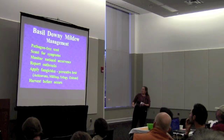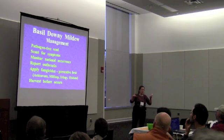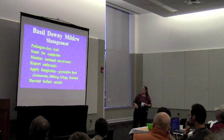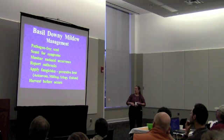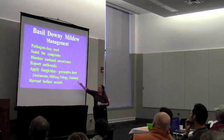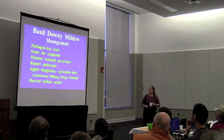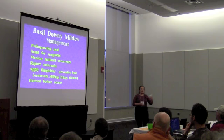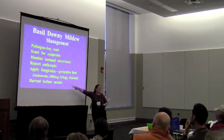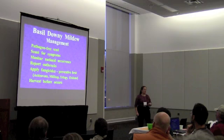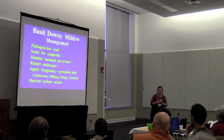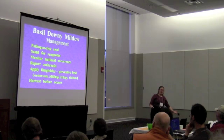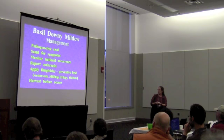For general management of basil downy mildew, start with disease-free seed and scout for symptoms. I maintain a national program where you can log occurrences and see where downy mildew is showing up — helpful for planning. There are some additional labeled products available in New York. One thing you can do that you can't with other diseases I've covered is harvest early: if downy mildew has just appeared or you hear it's in the area, just go out and harvest the basil rather than trying to fight it.